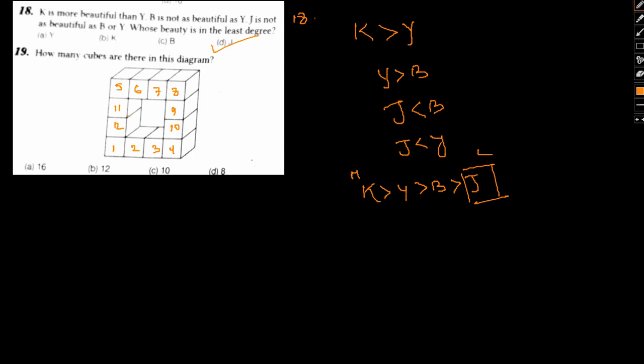Basically, 1 cube here and 1 cube here and 1 cube here and these 4 cubes are missing. So we have 12 cubes. So I hope both these questions are clear to you. These are fairly simple questions.